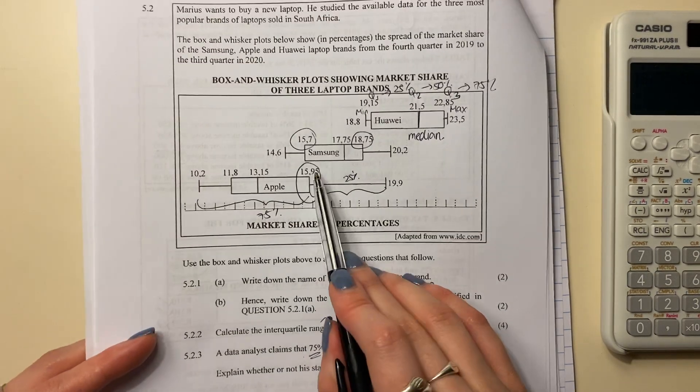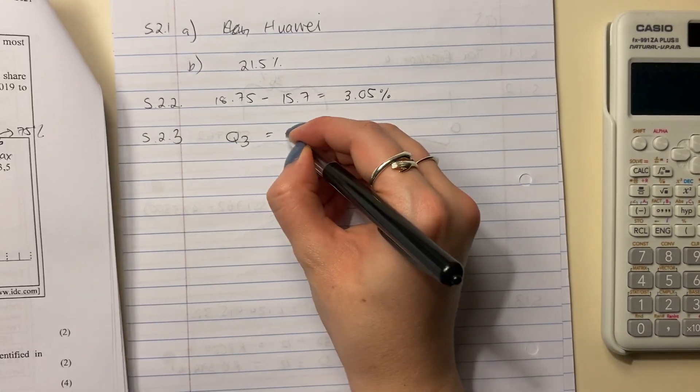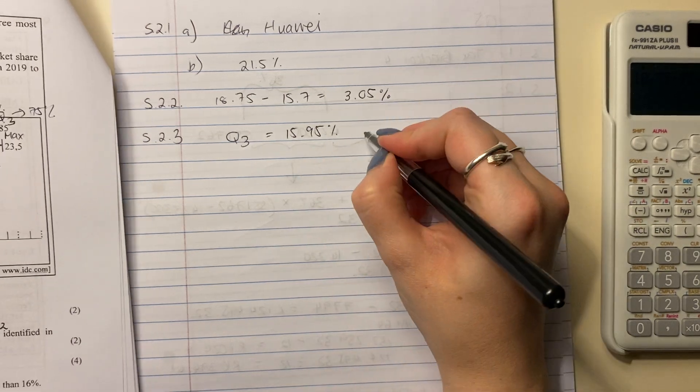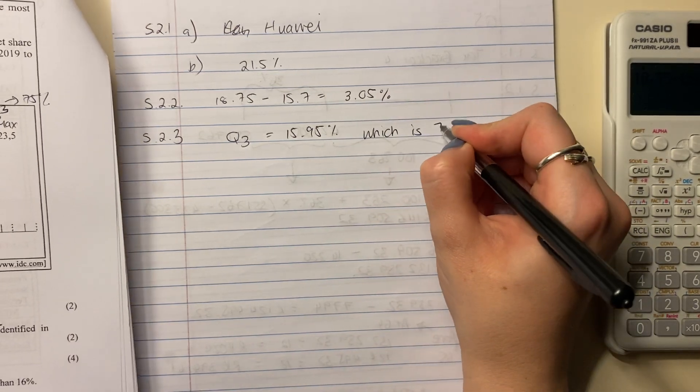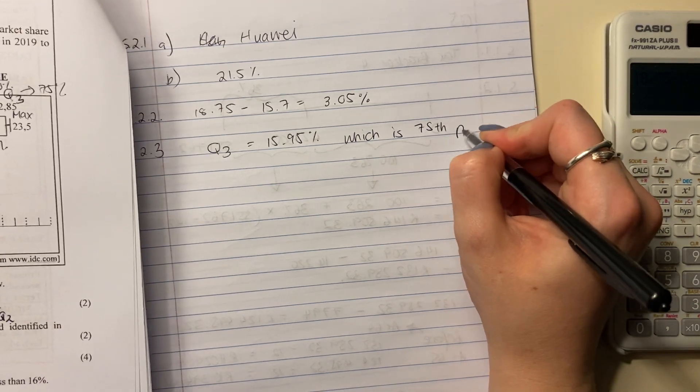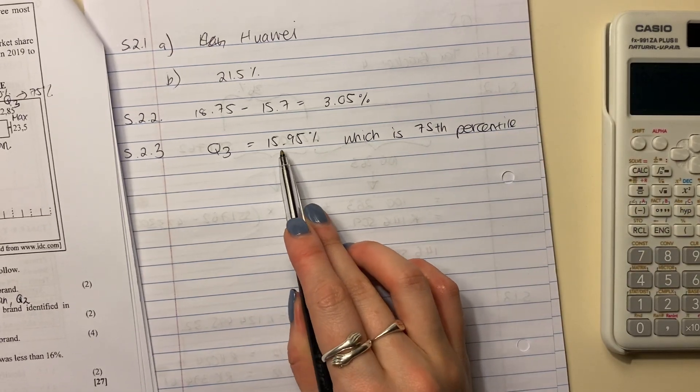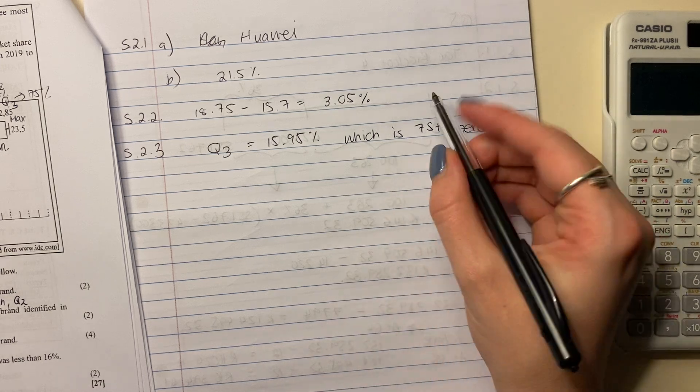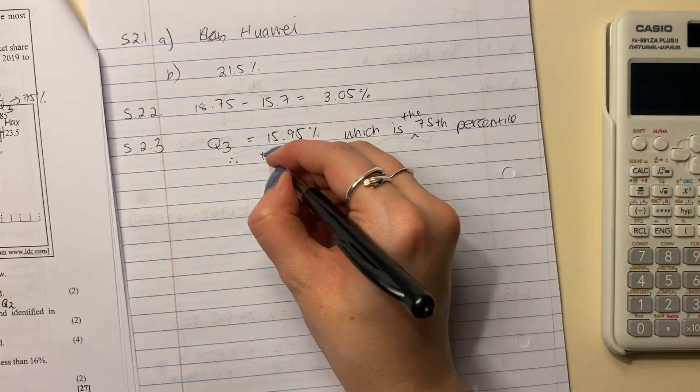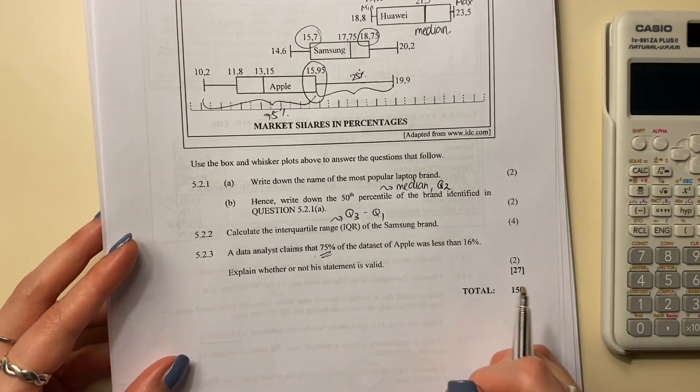So here it says, a data analyst claims that 75% of the data set of Apple was less than 16%. Well, it's true, because we know that quartile 3 equals 15.95%, which is the 75th percentile.